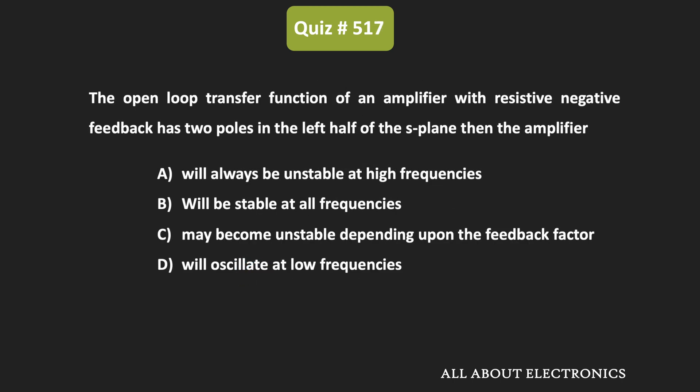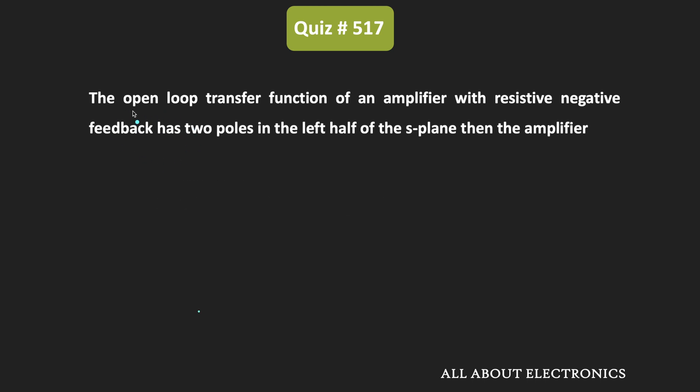Now let us see the next question. In this question also, we have been given a feedback amplifier. The open loop transfer function of this amplifier has two poles in the left half of the S plane, and there is a resistive negative feedback. From the given options, which one is correct? This question is again related to the stability of the feedback amplifier.